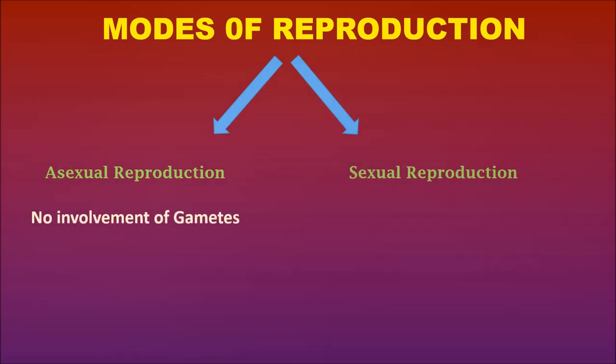Asexual reproduction involves no gametes — the gametes are not formed and there is no fusion of gametes. But in sexual reproduction, the gametes are formed and these gametes fuse to form the zygote, which further develops into the new organism.